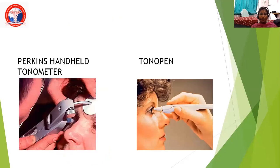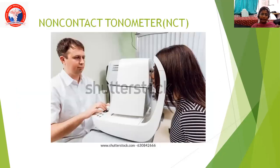The other tonometers are Perkins handheld tonometer and Tonopen. These are more recent. Perkins is usually used for children while measuring pressures in congenital glaucoma, also in examination under anesthesia in the operating theater. Since we are in the COVID era, we often go for the non-contact tonometer, which does not touch the patient's cornea. A puff of air is given and the pressure is recorded from the indentation it causes on the cornea. It is used mainly for screening; however, the gold standard remains the Goldmann Applanation Tonometer.